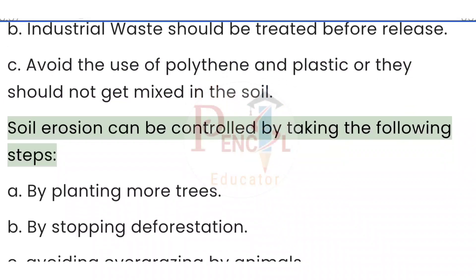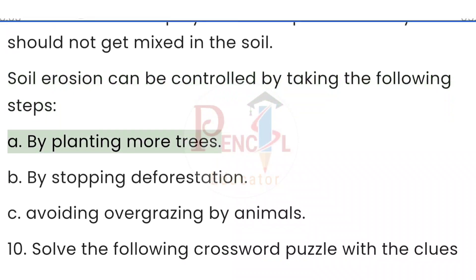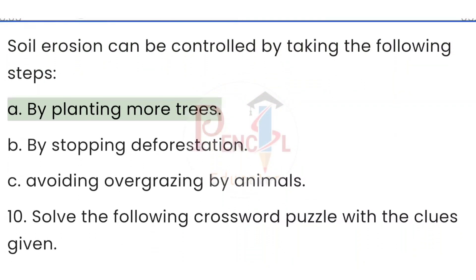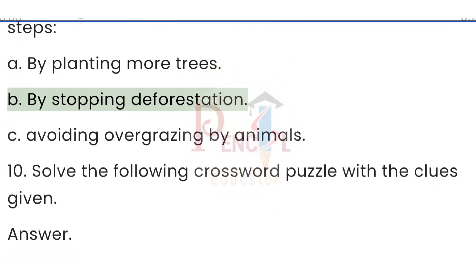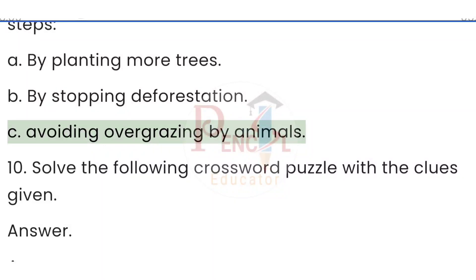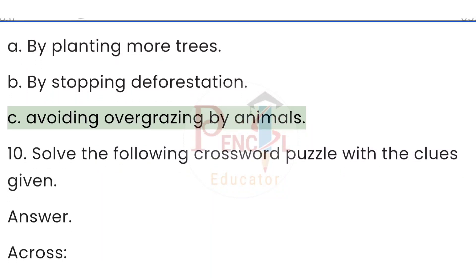Soil erosion can be controlled by — (a) planting more trees, (b) stopping deforestation, (c) avoiding overgrazing by animals.